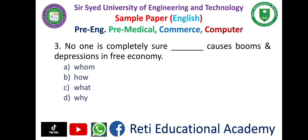Question number 3: 'No one is completely sure dash causes boom and depressions in a free economy.' — A. Home, B. How, C. What, D. Y. The correct answer is C: What. 'No one is completely sure what causes boom and depressions in a free economy.'